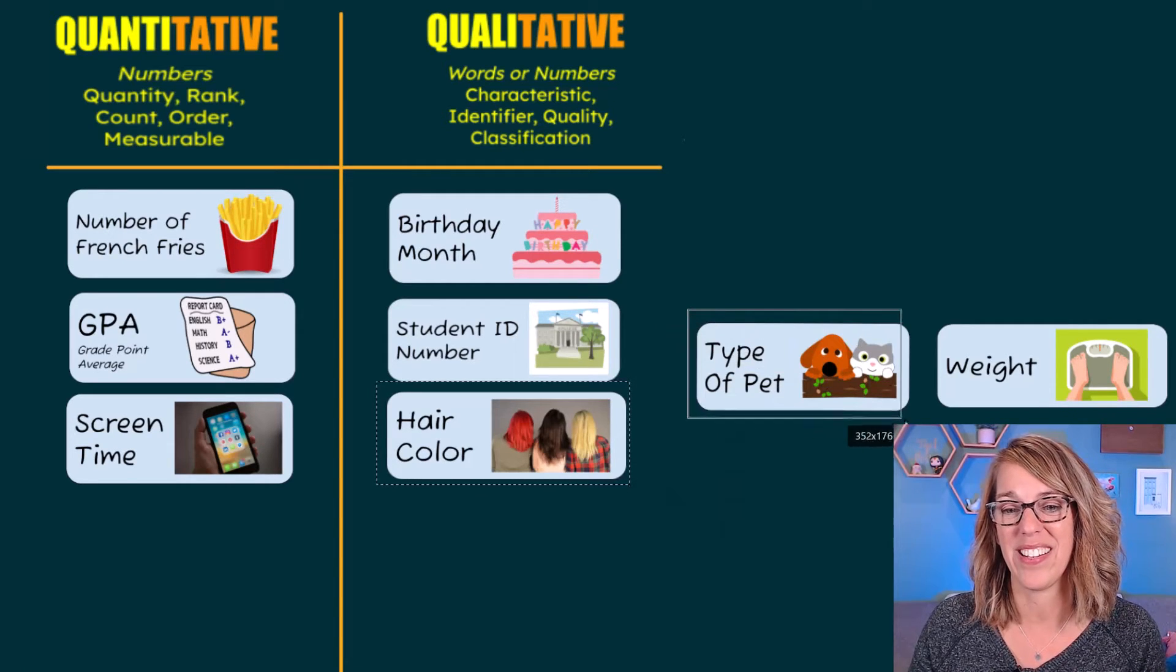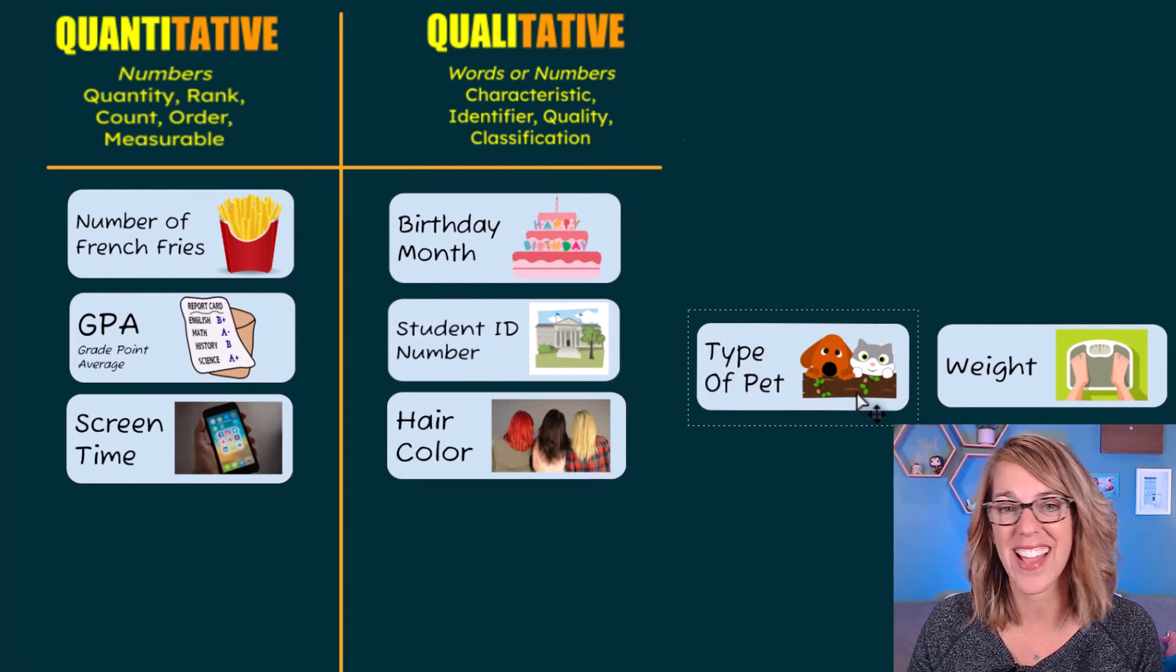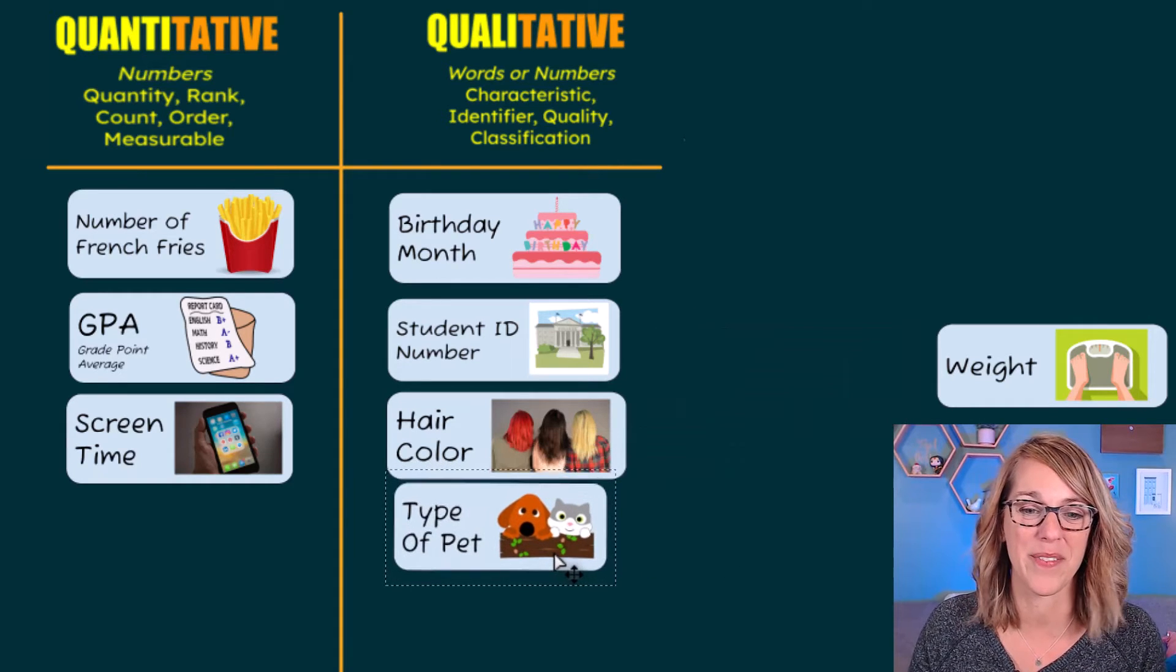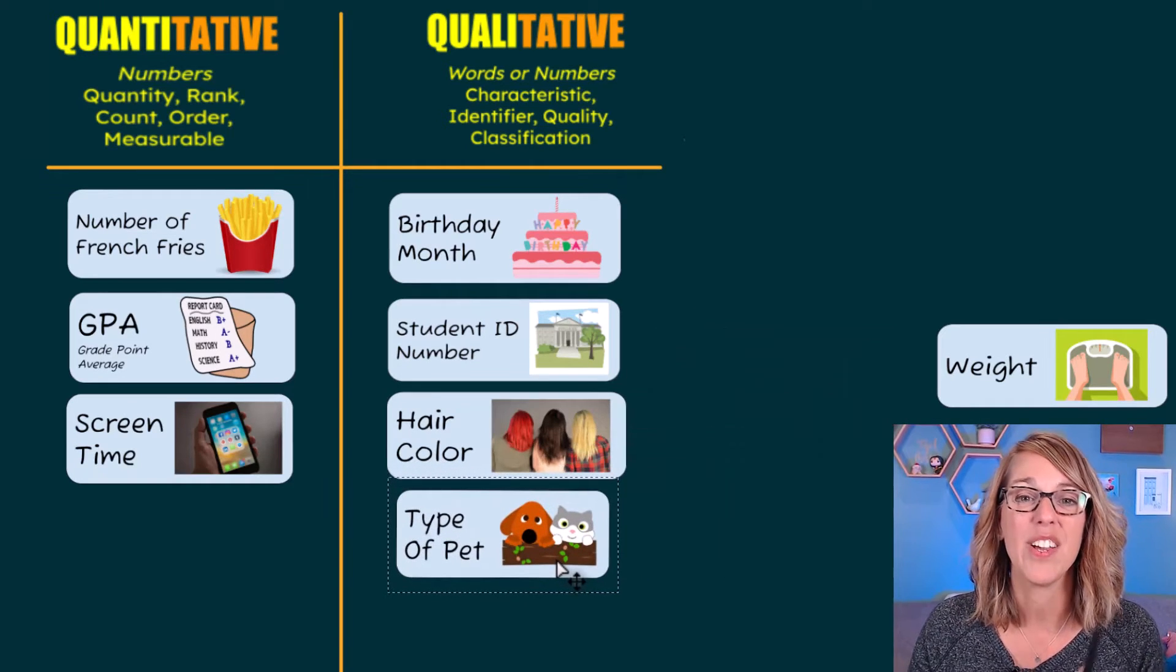Type of pet. So a type of pet, a cat, a dog, a hamster, a bat, whatever you happen to have, that's going to be qualitative.